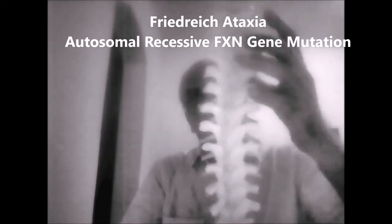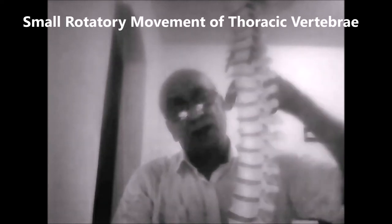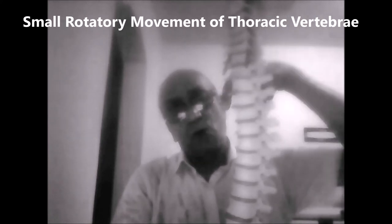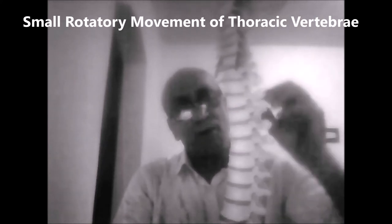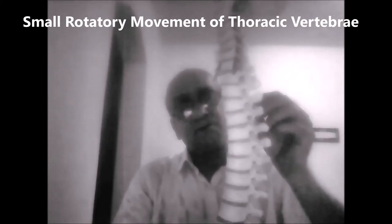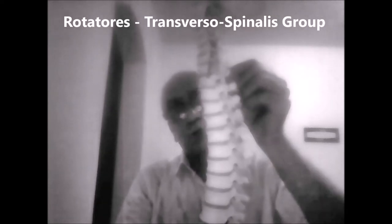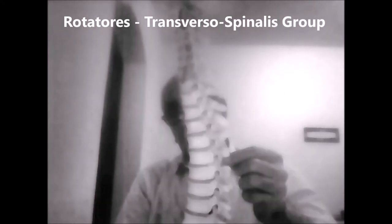The final point I want to mention is that in the thoracic region there is very little or no movement. There is only a very small nominal movement, and that is a rotatory movement through an imaginary axis going through the middle of the vertebral bodies.